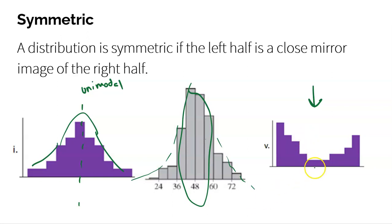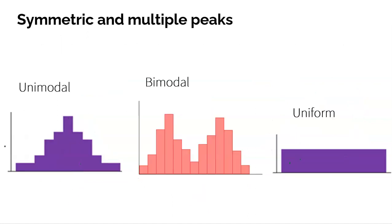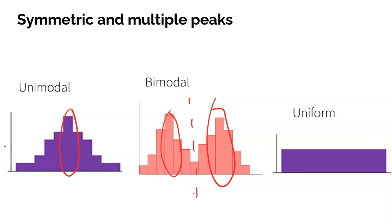This one is symmetric in a different way — bimodal. We see two peaks: one on the far left and one on the far right. The majority of data is low and high, with little data in the middle. But if you put a dotted line down the middle and fold it, it would still be considered symmetric. So bimodal is a different way of being symmetric, because there are two peaks on the left and the right.